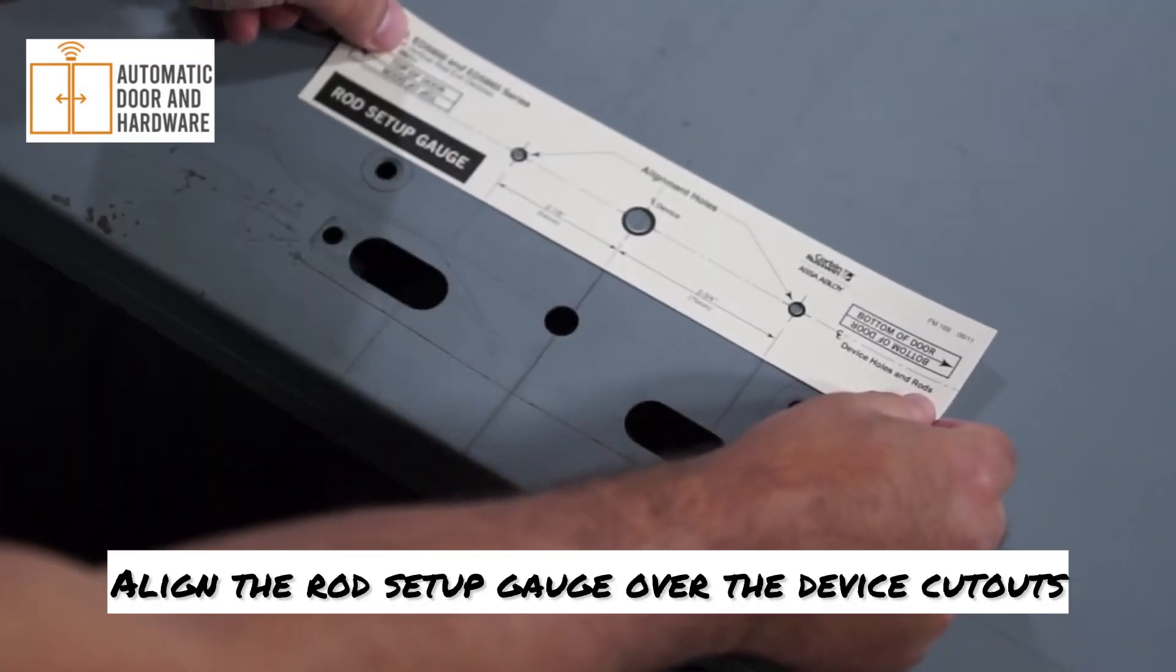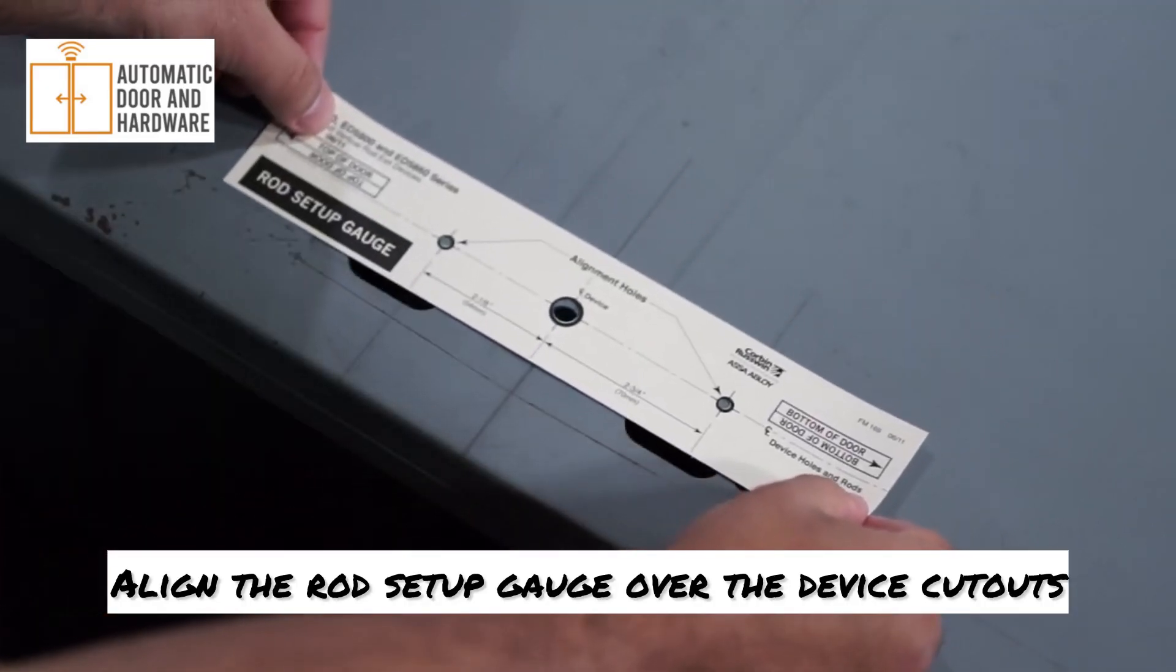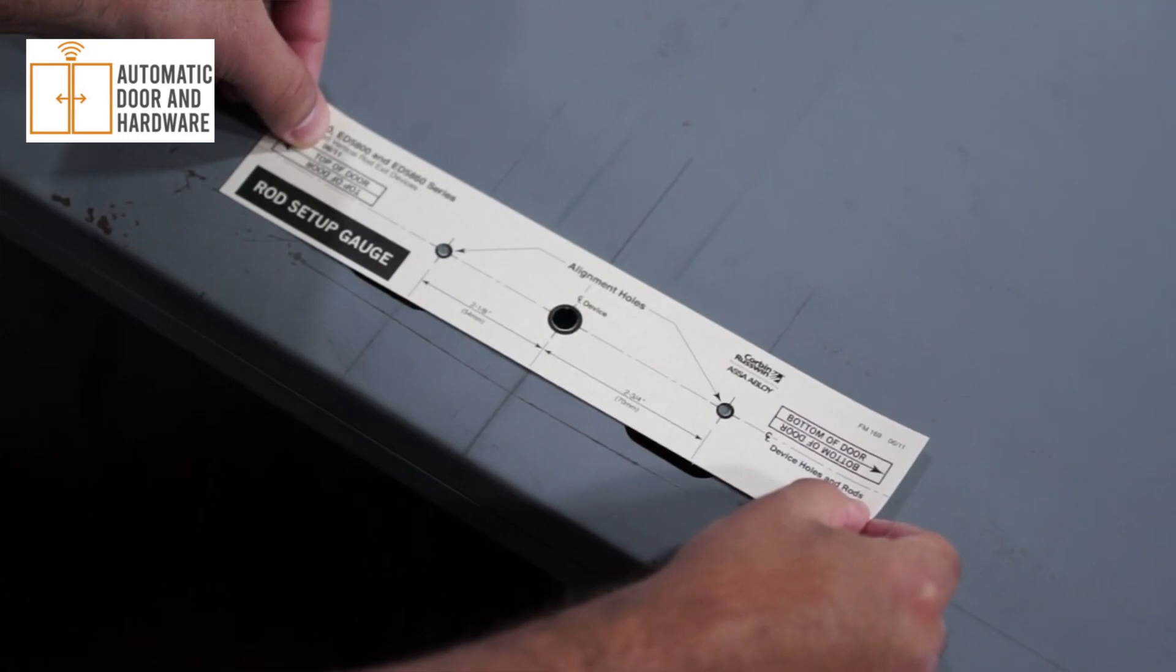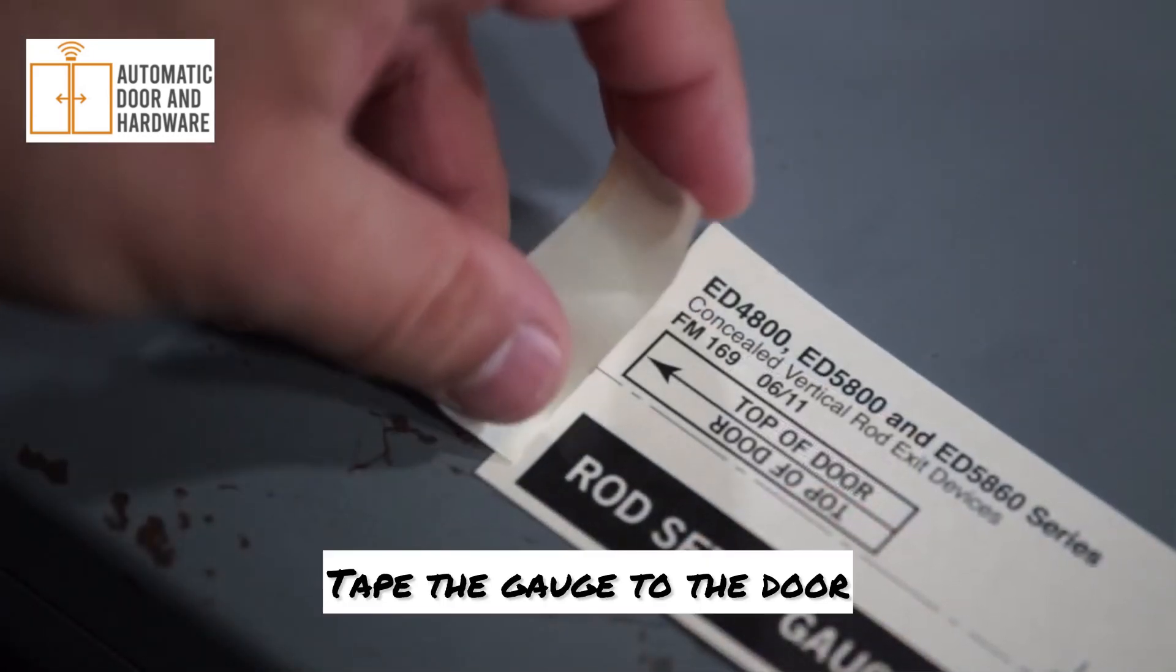Align the rod setup gauge over the device cutouts and center lines. Tape the gauge to the door.